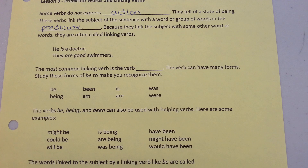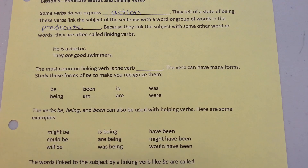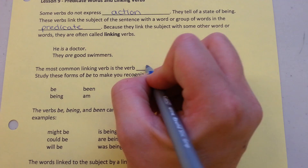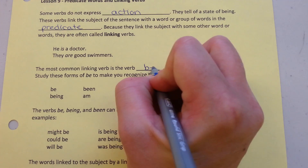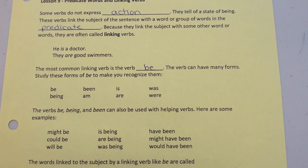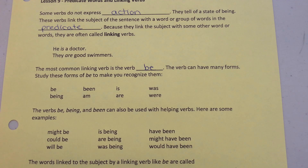For example: "He is a doctor" and "They are good swimmers" are just two examples. The most common linking verb is the verb "be." The verb can have many forms. Study these forms of "be" to make sure you recognize them.